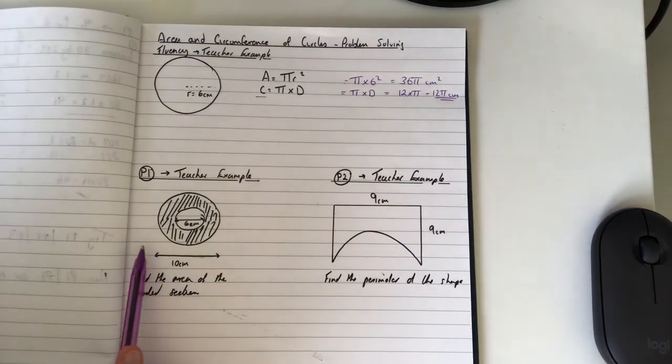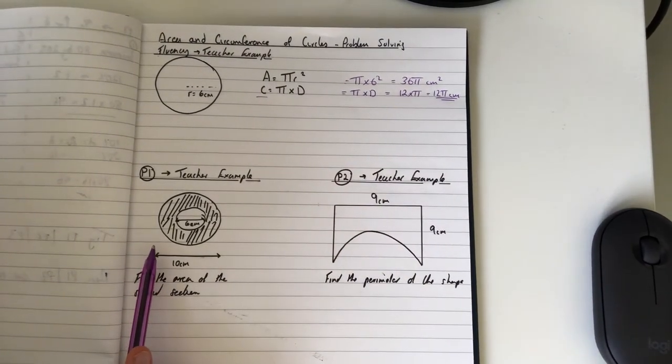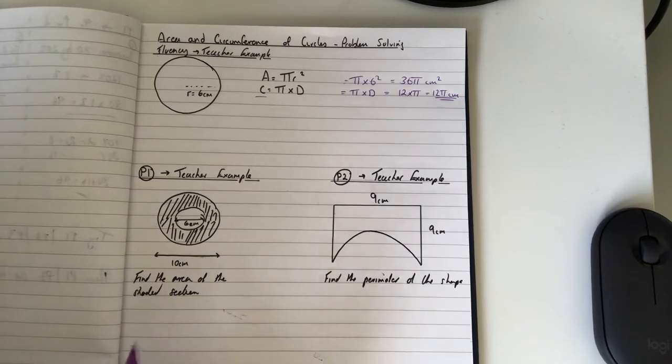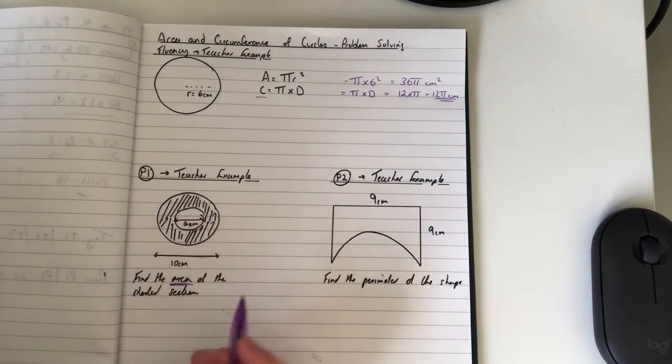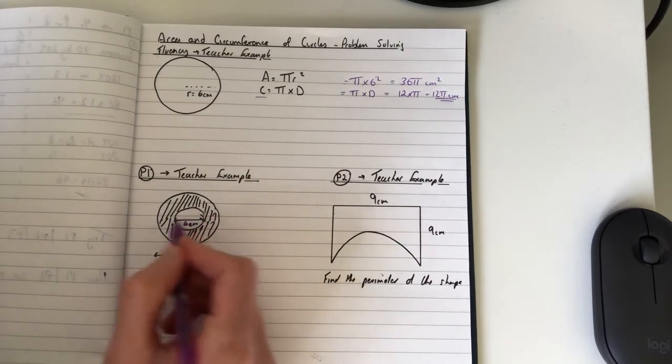Now moving down to P1, we're going to work out the area of this shaded section. The way we do that is we work out the area of the big circle, which is everything on that shape.